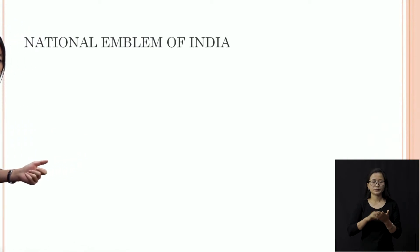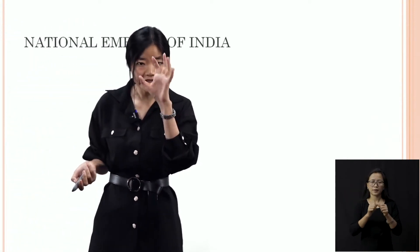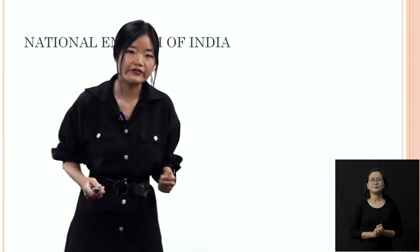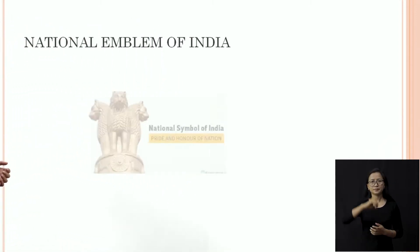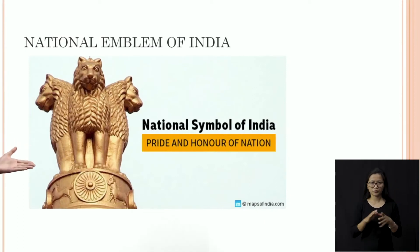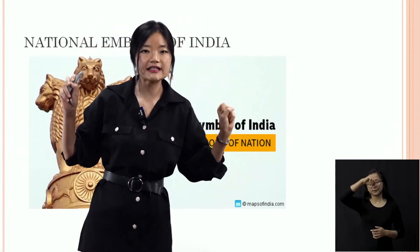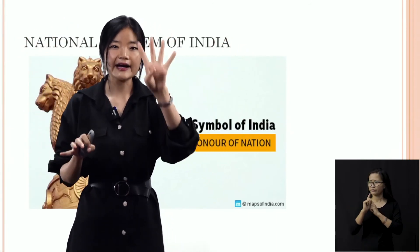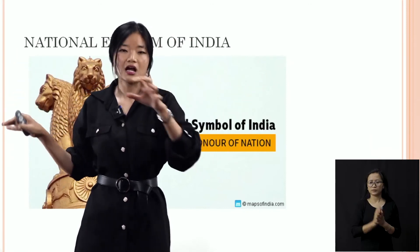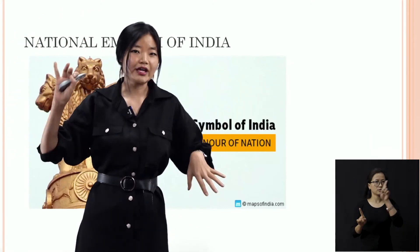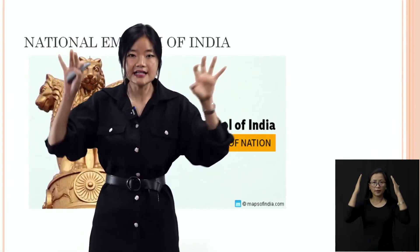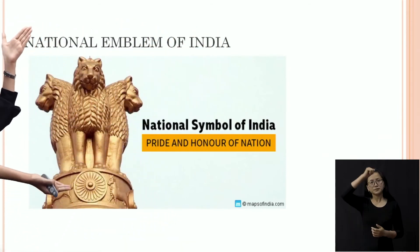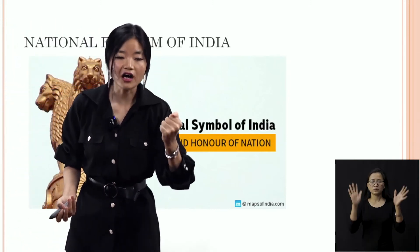The national emblem of India — I want all of you to look at the picture very thoroughly. So the national emblem of India is this. You will see a four-headed lion facing in different directions — one in the front, one here, one here, and the other one there. This is the national emblem of India, and this is the pride and honour of our nation.